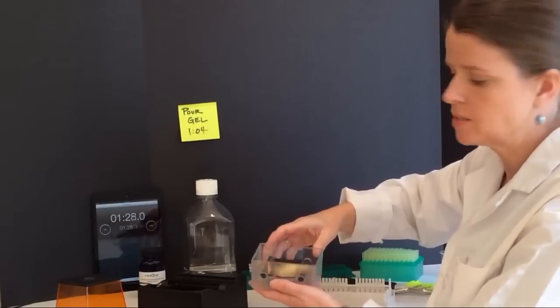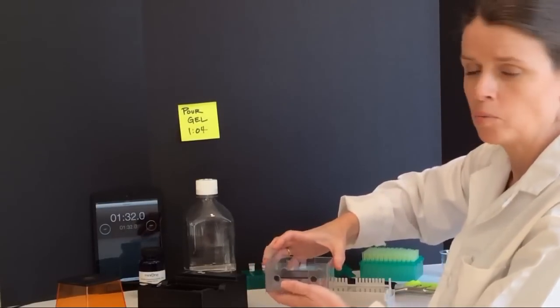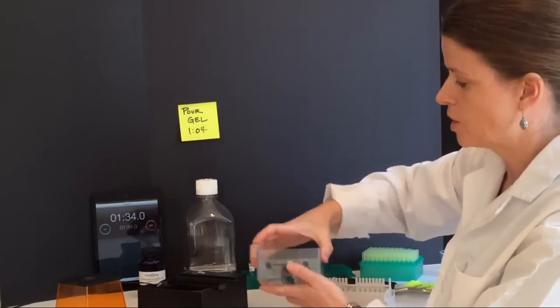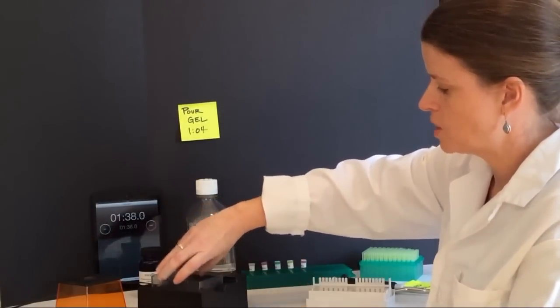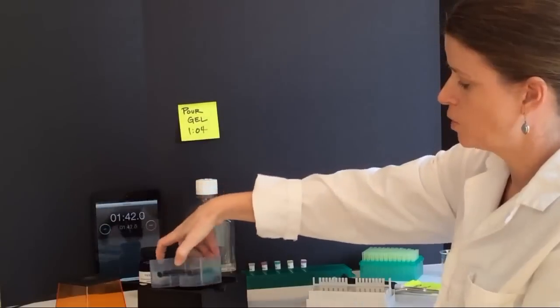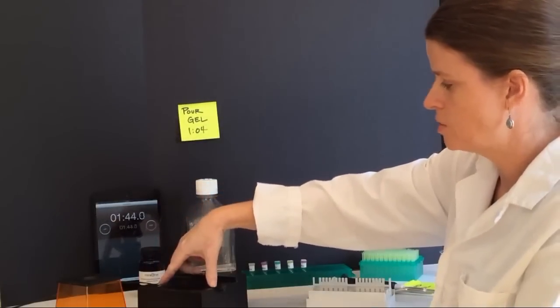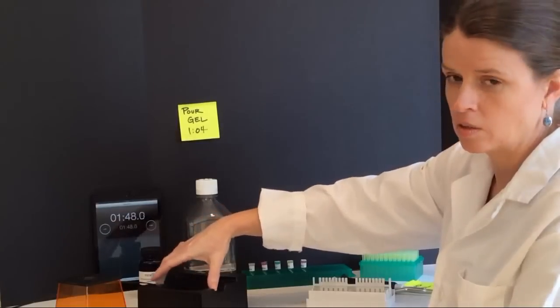This is the gel box. The gel box contains a platform in which to put your gel and the electrodes. You'll notice that if I try to place my gel box into my power supply incorrectly, it won't fit. There's only one right way to put it in. So students can't accidentally set up their gel with the electrodes in the wrong direction.